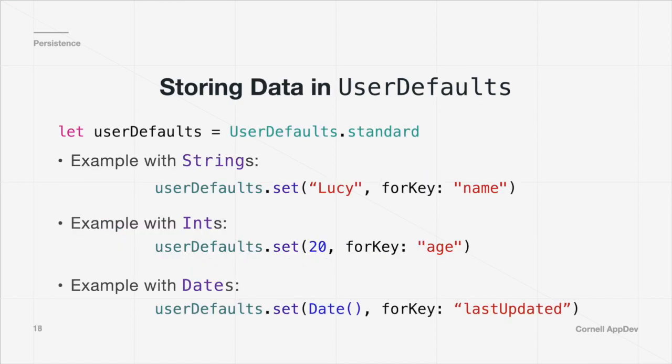To store data in UserDefaults you use the set syntax, where you provide a value and set it for a key of a given name. Here are some examples with simple types like strings and ints, and also more complex types like dates. For example: userDefaults.set("Lucy", forKey: "name").